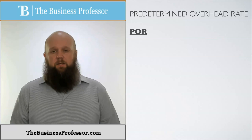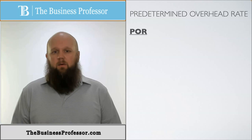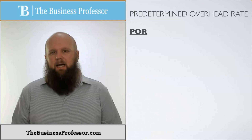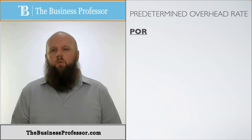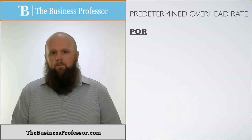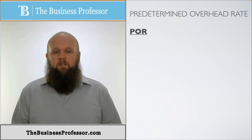Let's talk about manufacturing overhead. Direct material and direct labor are directly applied or moved to the job. But overhead is not — overhead has to be applied, because at the start of the job, we don't know exactly how much we're going to be using of manufacturing overhead for that job. We can only estimate it, but we still have to apply some of that cost to the job at the beginning so we know how much to charge the customer.